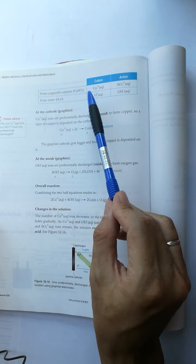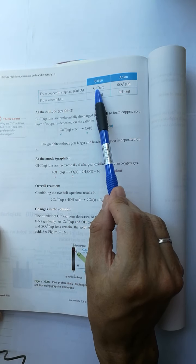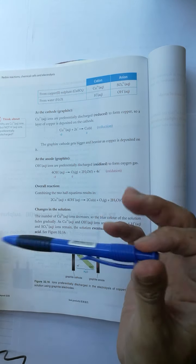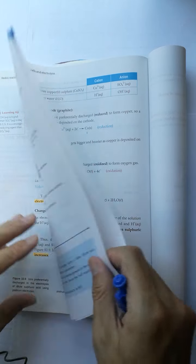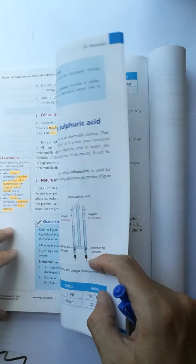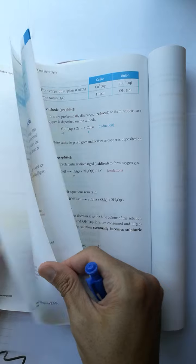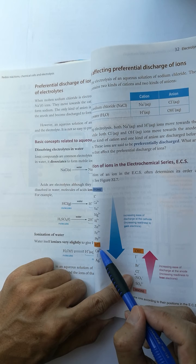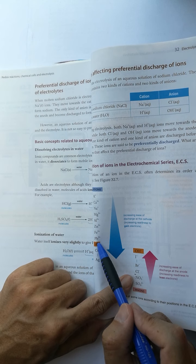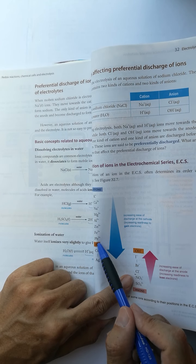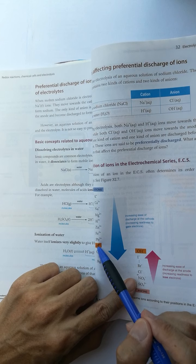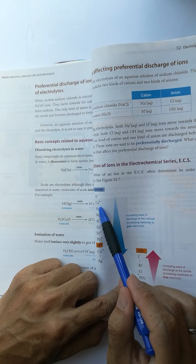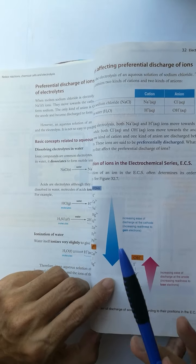The position of the copper(II) ion is lower than hydrogen ion according to the electrochemical series, so it is different from sodium ion.